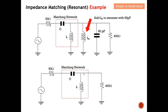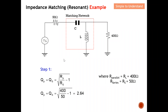Now let's design the L-element matching network as usual. Step one: calculate Qp and Qs using the formula — square root of (Rp/Rs minus 1). The inductor and 400 ohms are connected in parallel, so Rp equals 400 ohms. The capacitor and source resistance are in series, so Rs equals 50 ohms. From here I can calculate that Qp = Qs = 2.64.